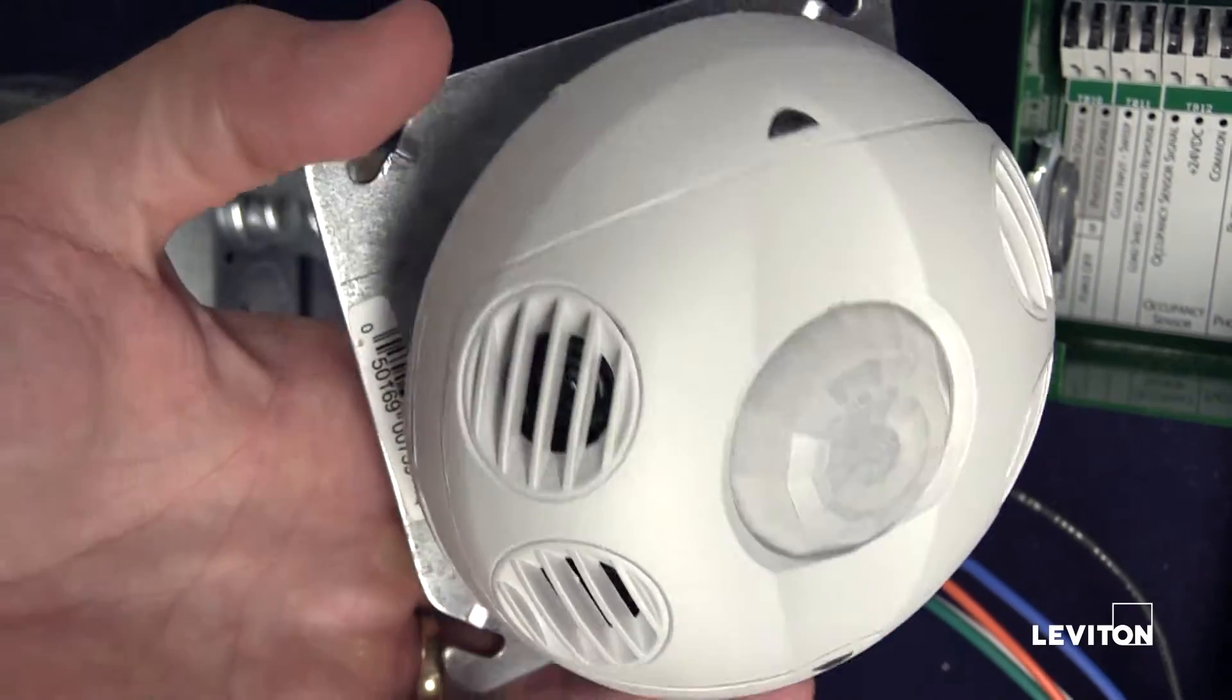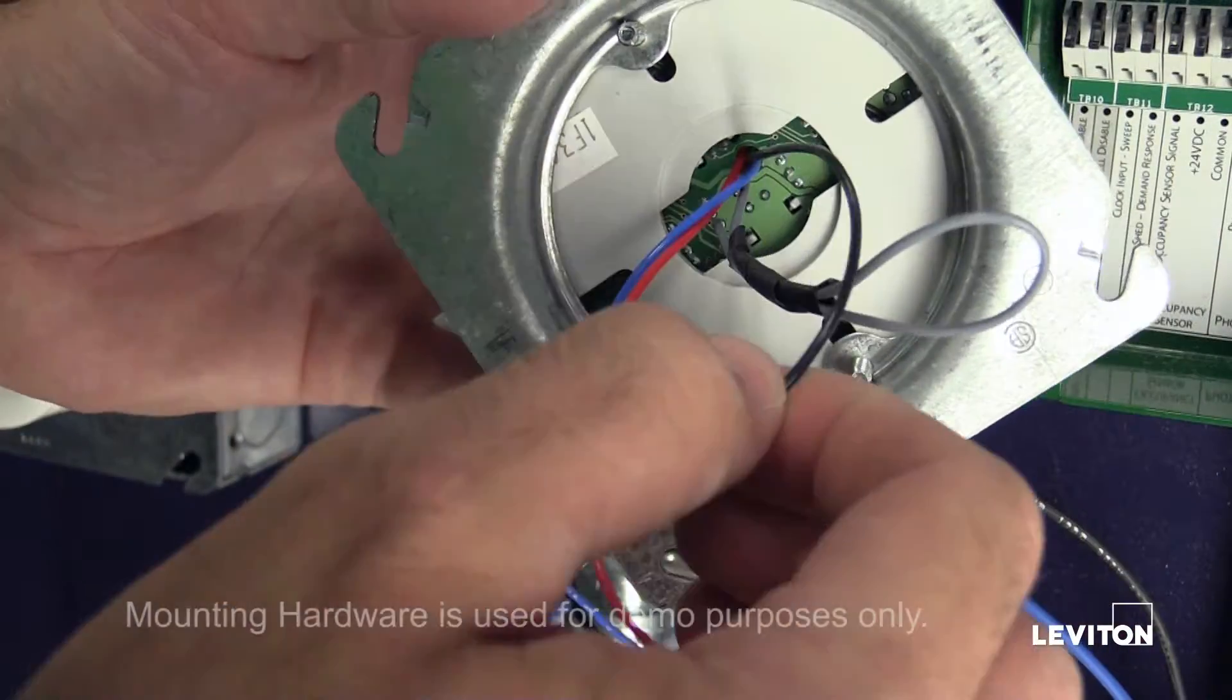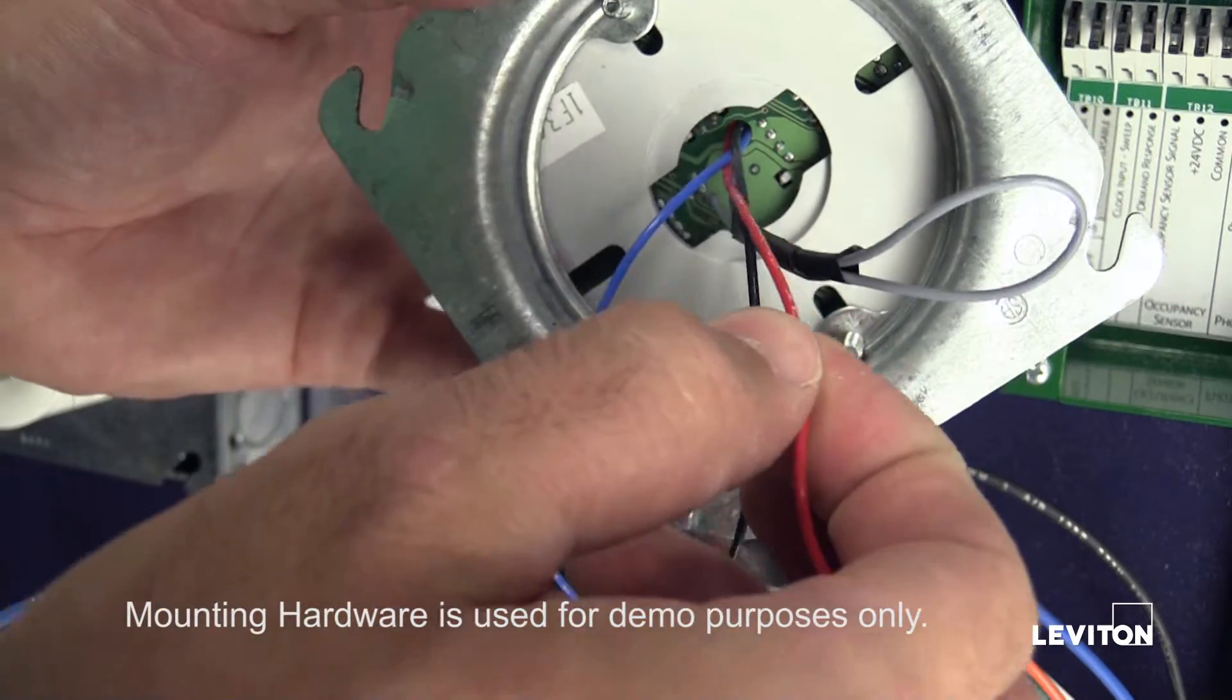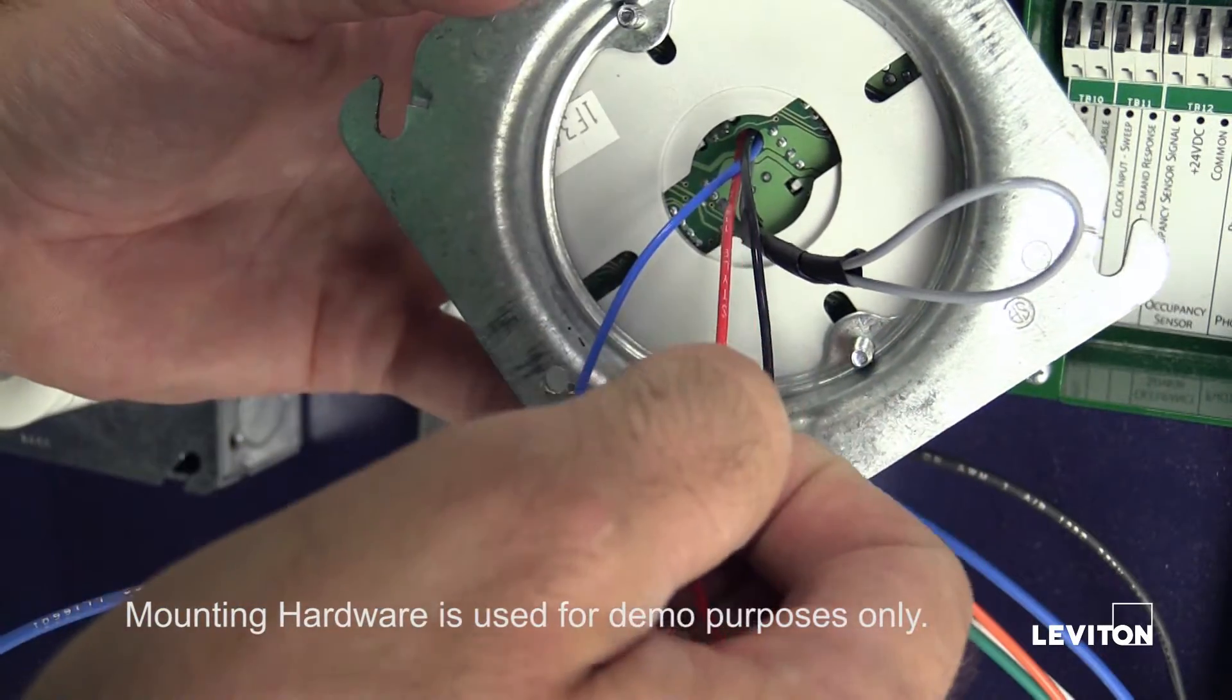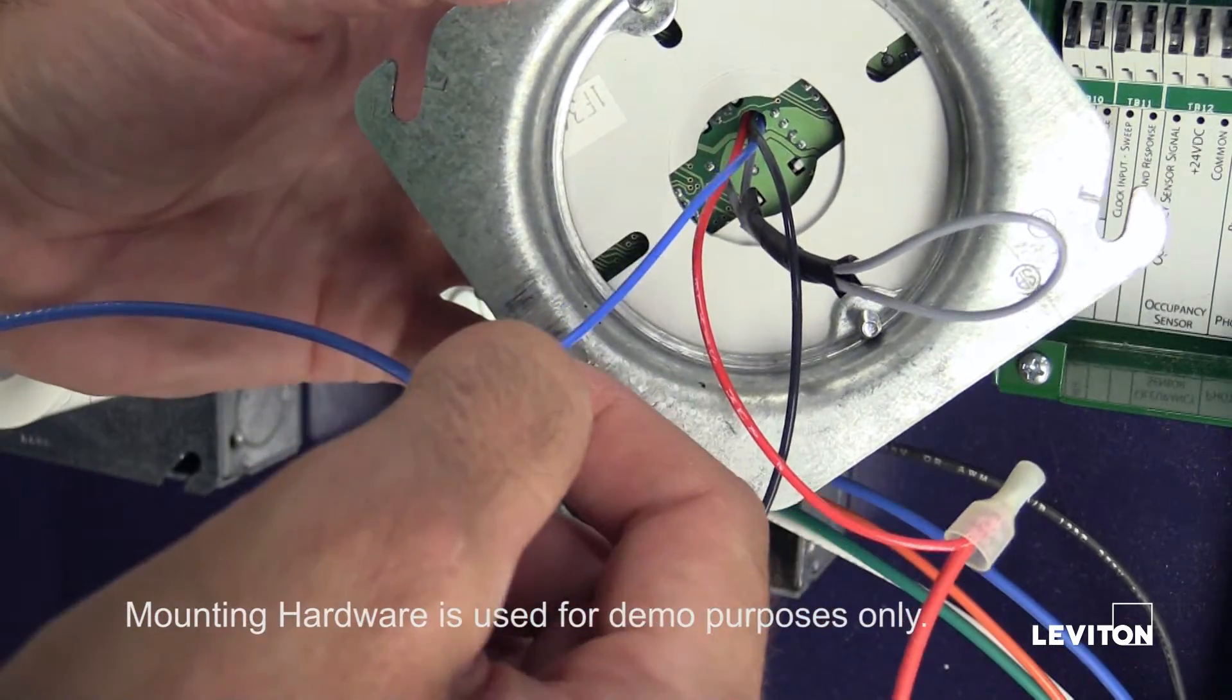This is the Leviton OSC20-M0W Occupancy Sensor. The black wire is your common. The red wire is your plus 24V DC. The blue wire is your occupancy sensor signal wire.